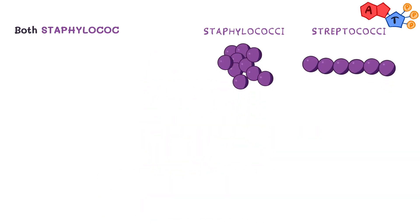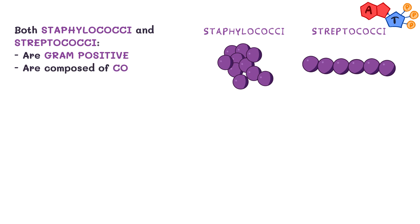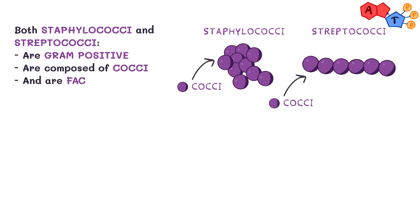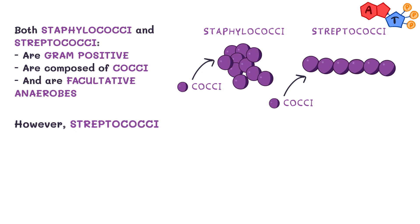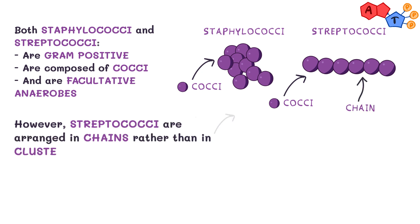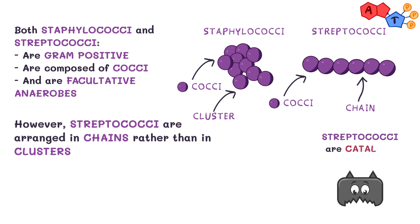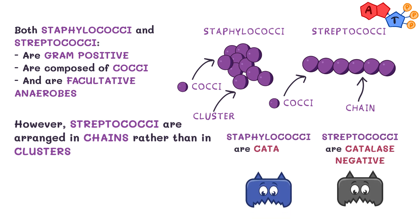First of all, both staphylococci and streptococci are gram-positive, they're both composed of cocci, and are facultative anaerobes. However, streptococci are usually arranged in chains rather than in clusters. In addition to that, streptococci are catalase negative whereas staphylococci are catalase positive.